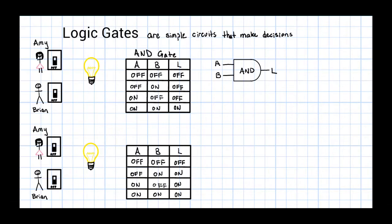Notice I used the word OR this time. This situation describes an OR logic gate. The light bulb will be on if either Amy or Brian have their switch on. I want to point out that the light bulb will still be on even when both switches are on. Here is a symbol we use when we want to draw an OR gate.